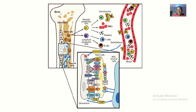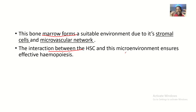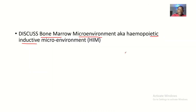There's another picture showing what a microenvironment of bone marrow looks like. The bone marrow forms a suitable environment due to its stroma cells and microvascular network. The interaction between the hematopoietic stem cells and this microenvironment ensures effective hematopoiesis. For hematopoiesis to take place, this microenvironment must be there and must be functioning optimally. This is an overview of the functions of the bone marrow microenvironment, also known as the hematopoietic inductive microenvironment.